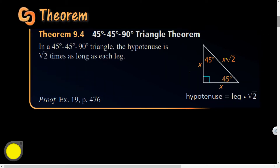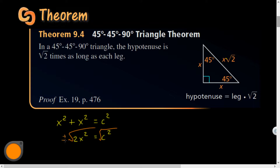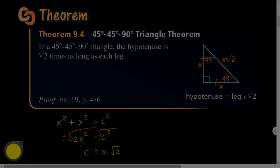Here's why that works. Using the Pythagorean theorem: x² + x² = c². That gives 2x² = c². Taking the square root of both sides, c = x√2 (taking only the positive solution since we're talking about a length). So just using the Pythagorean theorem for a 45-45-90 isosceles right triangle, the hypotenuse is always √2 times longer than either leg.